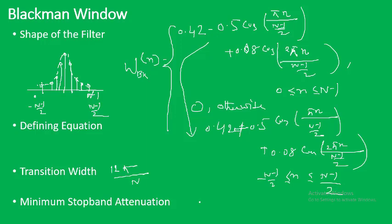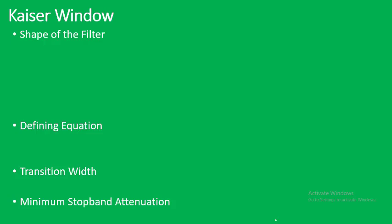The minimum stopband attenuation for the Blackman window is minus 74 dB. So if you require minus 74 dB attenuation at the stopband, you can use the Blackman window. The last one is the Kaiser window, whose shape is very flexible — by varying additional defining parameters we can obtain any kind of window from the Kaiser window.